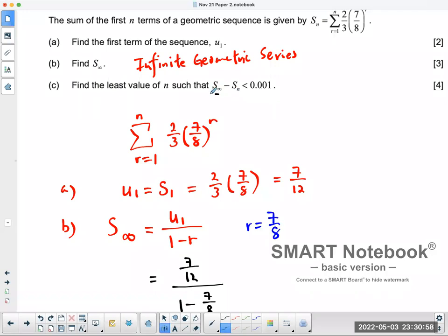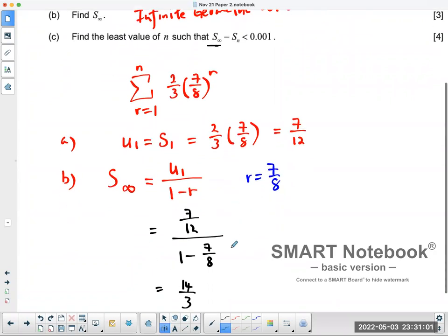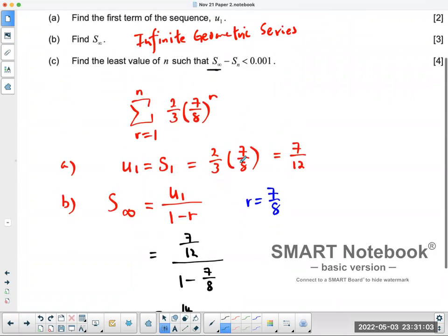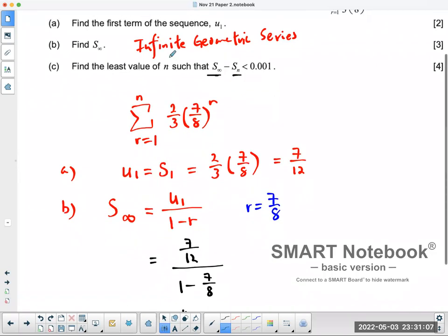Now this part is the infinite geometric series, which we already got the answer, 14 over 3. This part is the sum of not infinite, it's a sum of a finite geometric series. So you have to use the other formula.